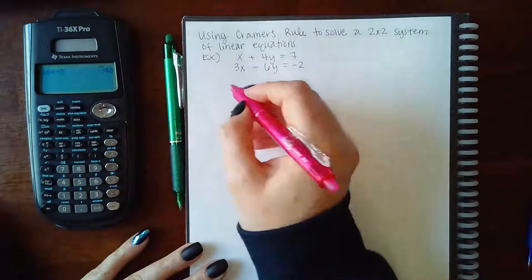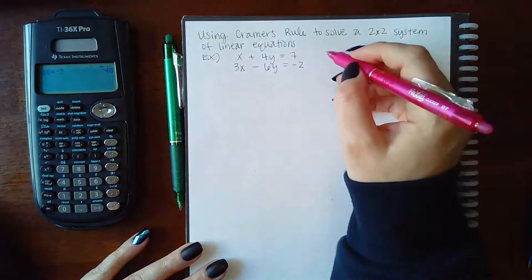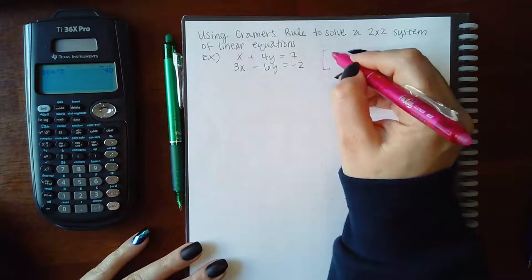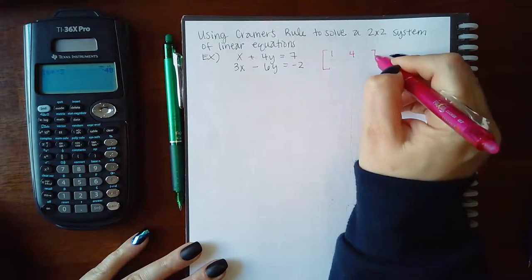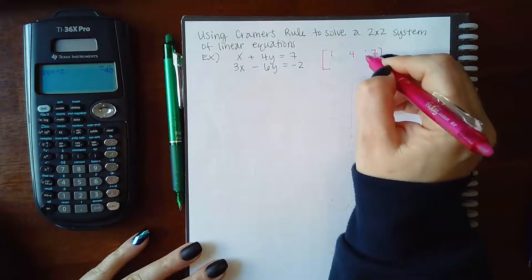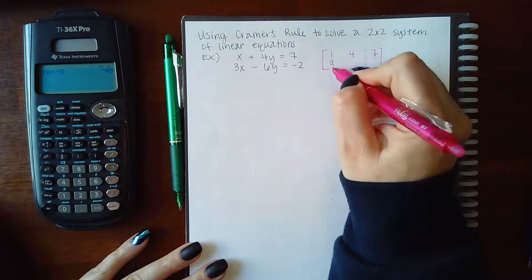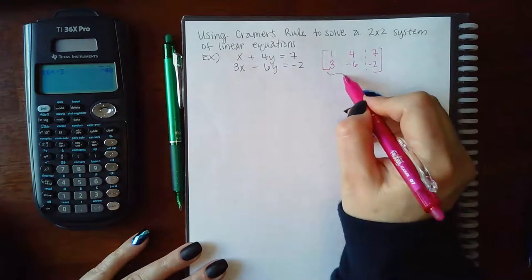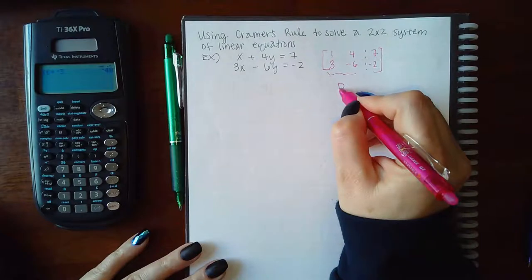So the first determinant that you're going to have is if you write this as an augmented matrix, you would write 1, 4, 7, and then you would write 3, negative 6, negative 2. Okay, this side over here, you're going to label as D.